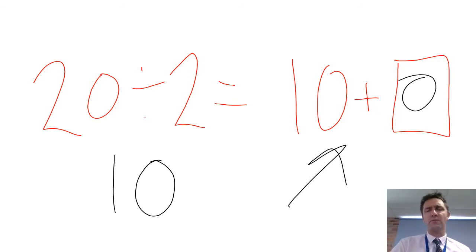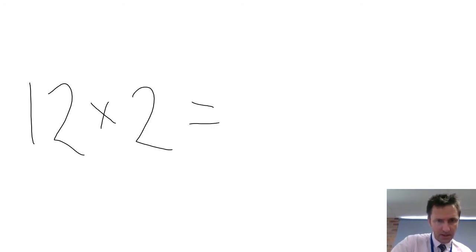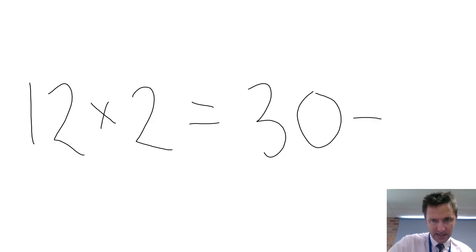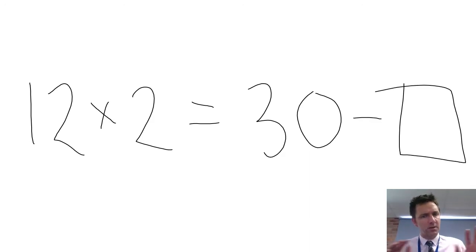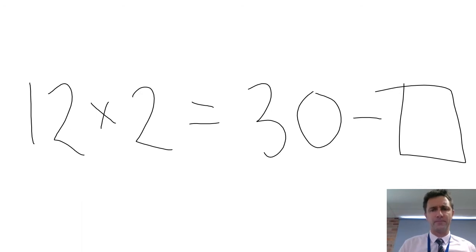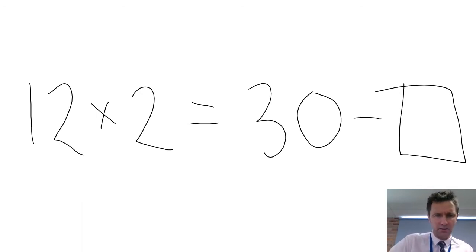We're going to do one more just before all the teachers come into the staff room. Let's have a go at 12 times 2 equals 30 take away something. You have a go — pause me and have a go, see if you can do it. Okay, I hope you paused me and had a go. Let's have a look at it together now.